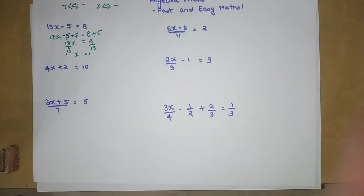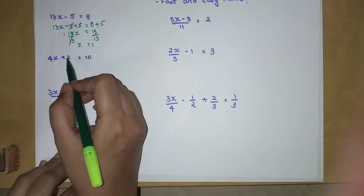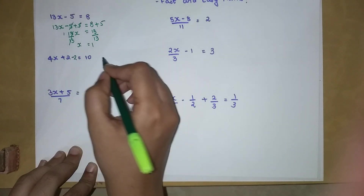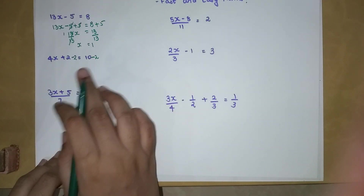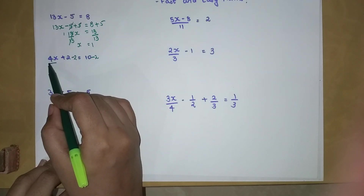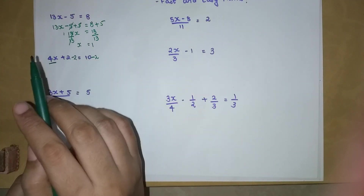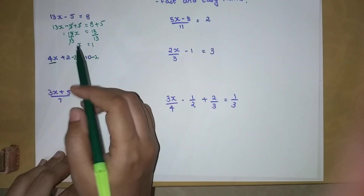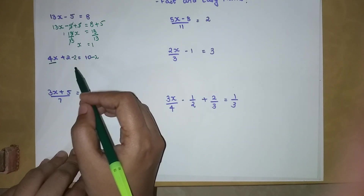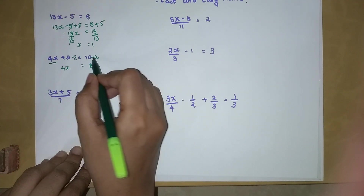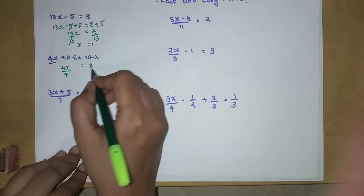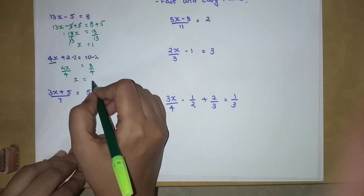Now let's quickly solve: we have 4X plus 2 equals 10. I want to get rid of the 2, so I subtract 2 from both sides. Students, please understand we do not follow BODMAS here — we treat the number multiplied with the variable as one element until we are left with just 4X on one side. So 4X equals 8. Now I divide both sides by 4, so X equals 2.